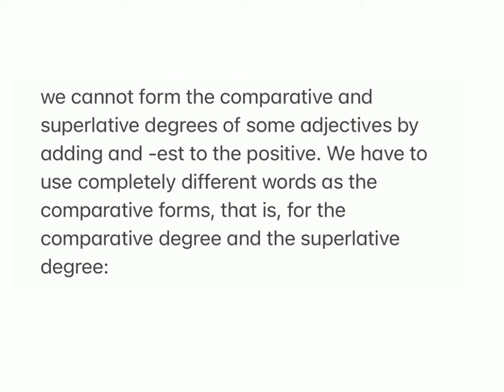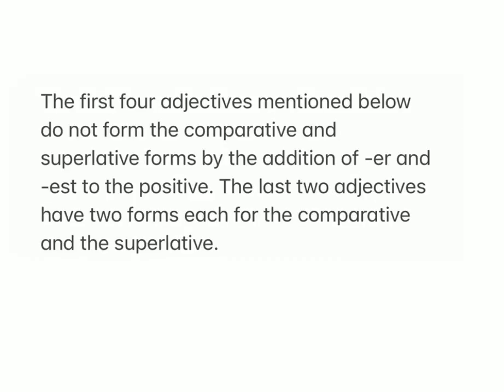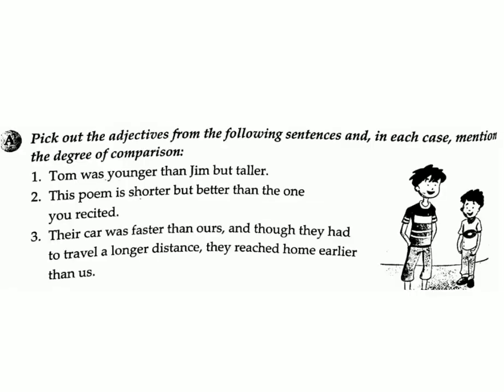We cannot form the comparative and superlative degrees of some adjectives by adding -er and -est to the positive. We have to use completely different words for the comparative and superlative degrees. Examples: good, better, best; bad, worse, worst; ill, worse, worst. Some adjectives – many (number), much (quantity), well, little, late, old – have irregular or multiple forms: more, most; better, best; less/lesser, least; later/latter, latest/last; older/elder, oldest/eldest.